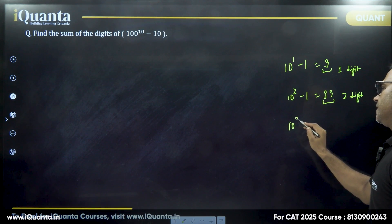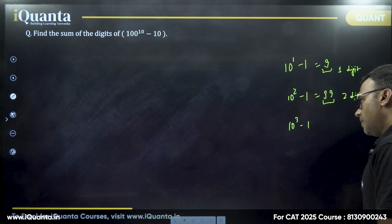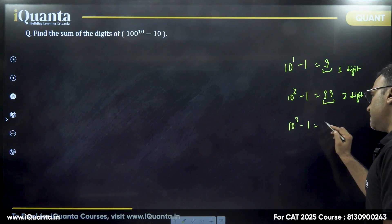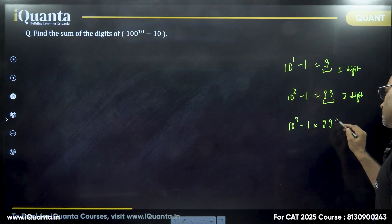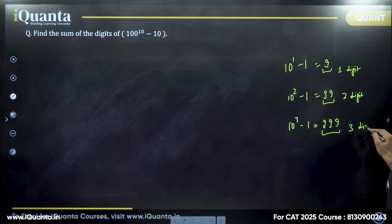10 to the power 3 minus 1. 10 to the power 3 is 1000 minus 1, that is 999. So this has three digits and all of them are nines.